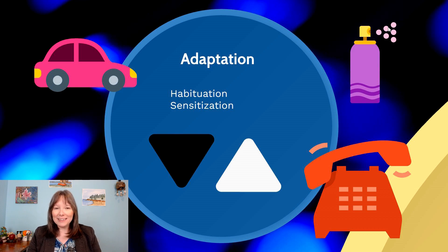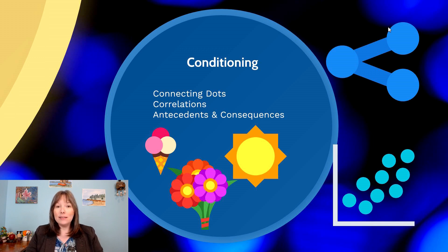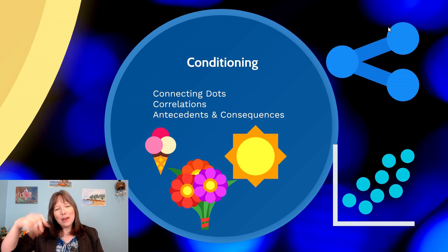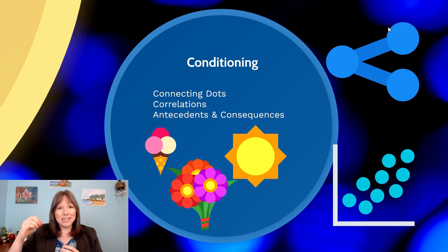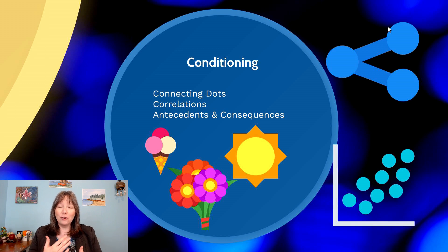In addition to adapting to our environment, we're also hardwired to detect patterns. We don't just notice individual stimuli — we start to correlate and connect the dots. This ability starts early in infancy. Infants who drop something from their high chair and hear the splat will keep dropping it — not to irritate their caregivers, but because they're interested in the scientific experiment. They drop something and it falls, and they repeat this until they master the connection between that motion and its result.